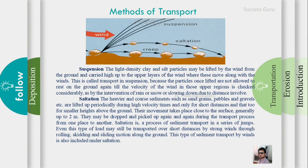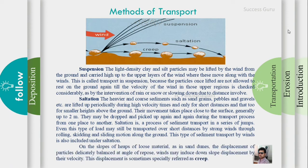Saltation involves slightly heavier particles. In saltation, particles bounce along the surface and can reach heights of around 2 meters. This process contributes to the formation of sand dunes. The third transportation method is creep, where larger particles roll along the ground surface. The three transportation methods are suspension, saltation, and creep.